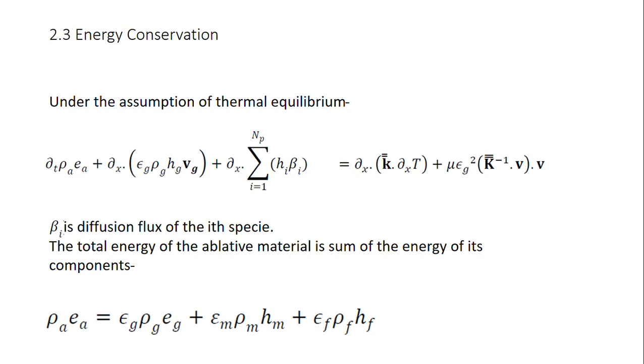Coming to the energy conservation equation, the first term is the rate of change of internal energy of the system. The second term is for convection heat. The third term is for diffusion flux. On the right hand side, the first term is for conduction heat transfer through conduction, and the last term...